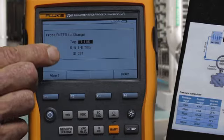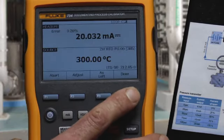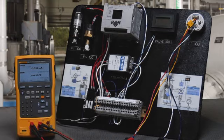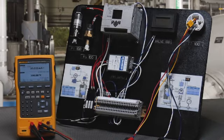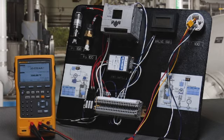Tags, serial number and ID of who did the work. Done. And we're done because it passed the test. And we have completed documenting the performance of this RTD transmitter using the 754 documenting process calibrator.